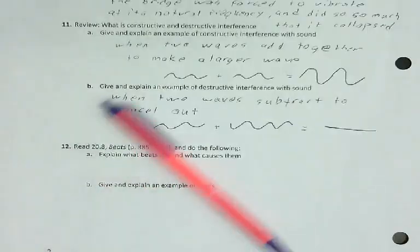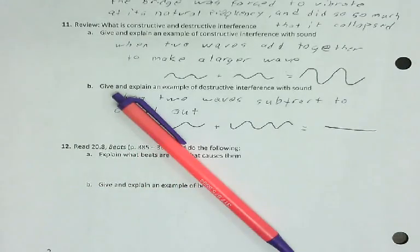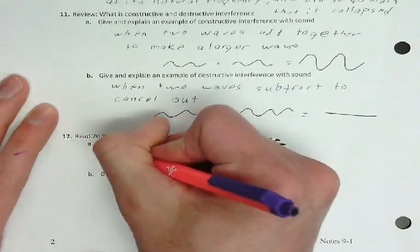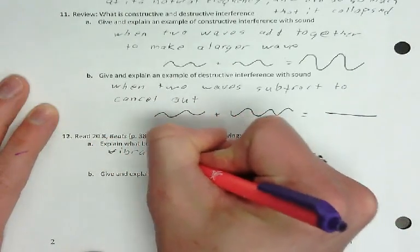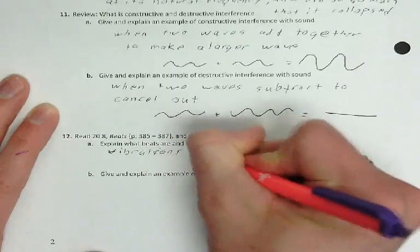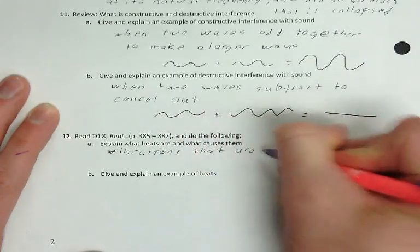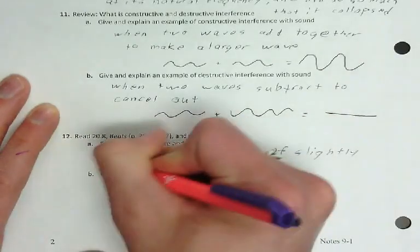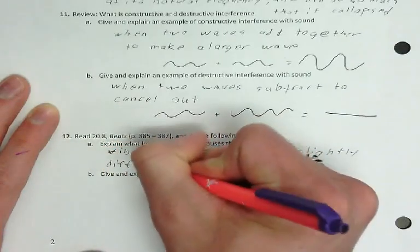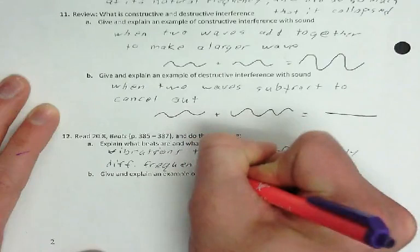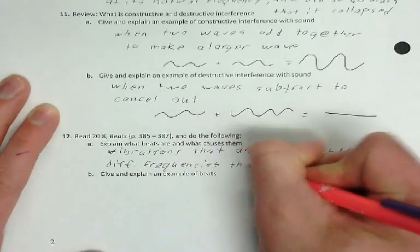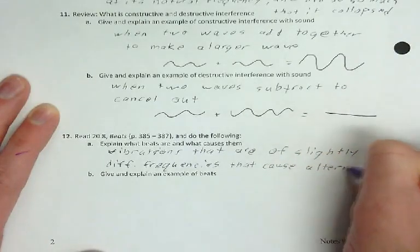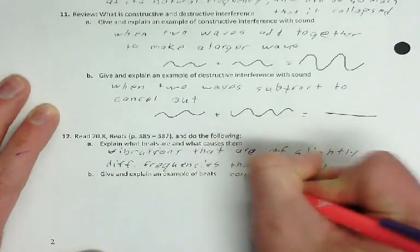So beats and what causes them. Let me let you hear beats first. Beats are vibrations that are of slightly different frequencies that cause alternating constructive and destructive interference.